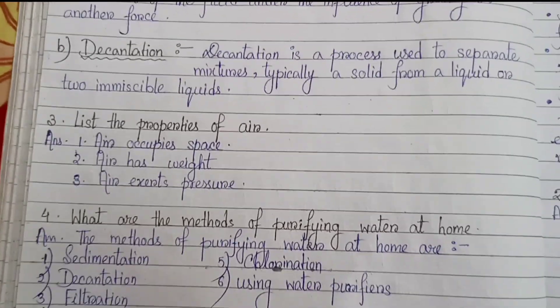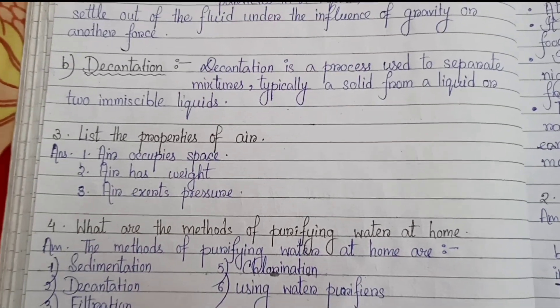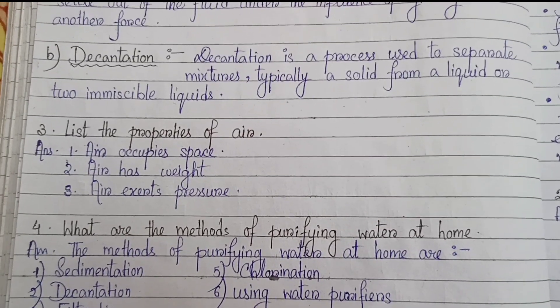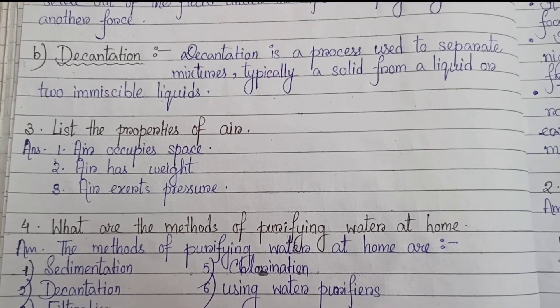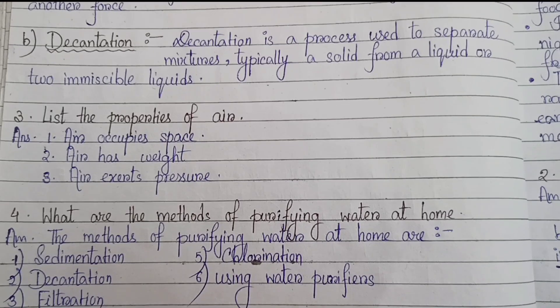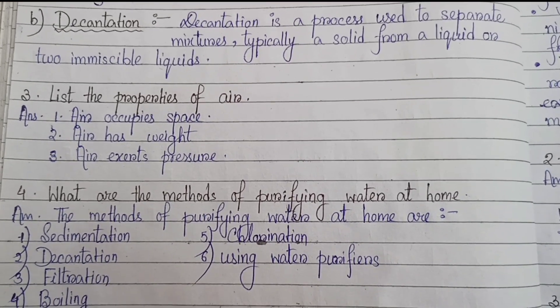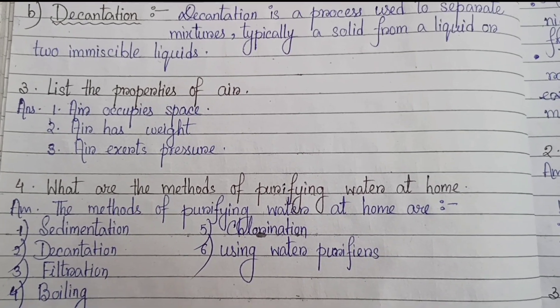Number 3: List the properties of air. Number 1: air occupies space. Number 2: air has weight. Number 3: air exerts pressure.